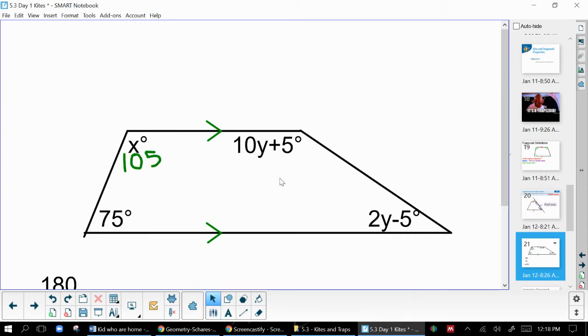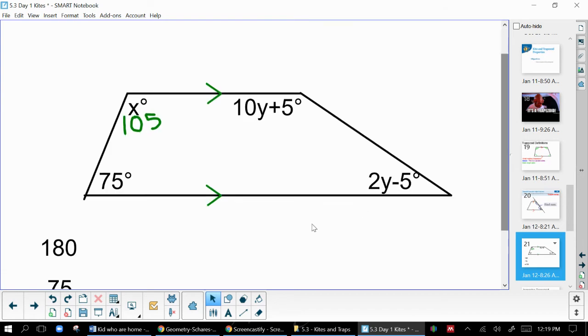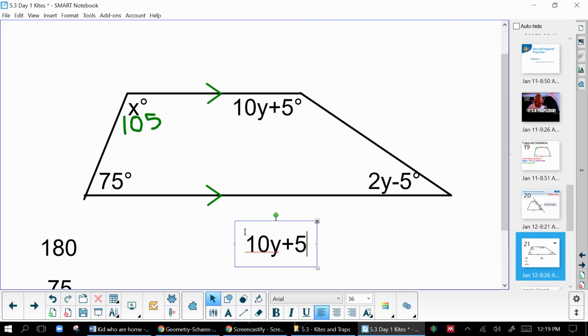Now, if you look at these two angles, we've got some algebra to do. The biggest thing is before you start trying to solve anything, before you start doing any algebra, you need to know what is true before you can do that. And so what I know is that if I took this angle plus this angle, they'd equal 180 degrees. And so I need to write an equation that says that. 10y plus 5 plus 2y minus 5 equals 180.